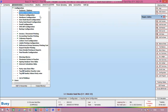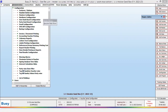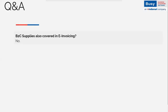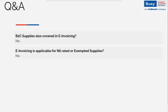Now let's address common questions about e-invoicing. First: is e-invoicing required for B2C suppliers? No — e-invoicing is needed only for B2B transactions, not B2C (unregistered or cash parties). Second: is e-invoicing applicable for nil-rated or exempted suppliers? No — e-invoicing applies only for GST-registered parties, not nil-rated or exempted suppliers.